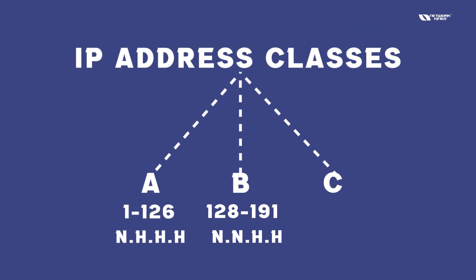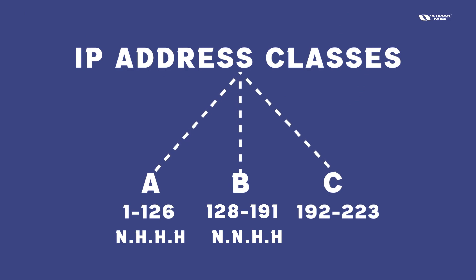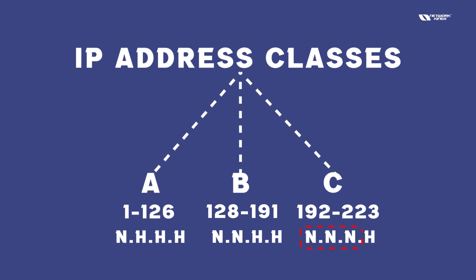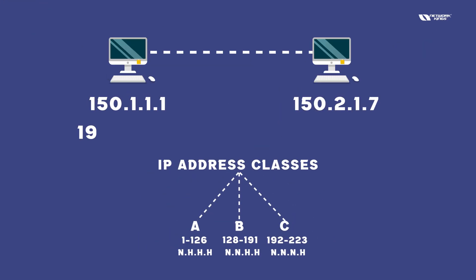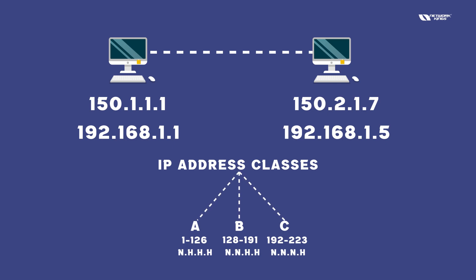In Class C we have 192 to 223, so there are three network parts. Suppose I have 192.168.1.1 and 192.168.1.5 — this is Class C where we match three network bits. They are going to communicate — yes.